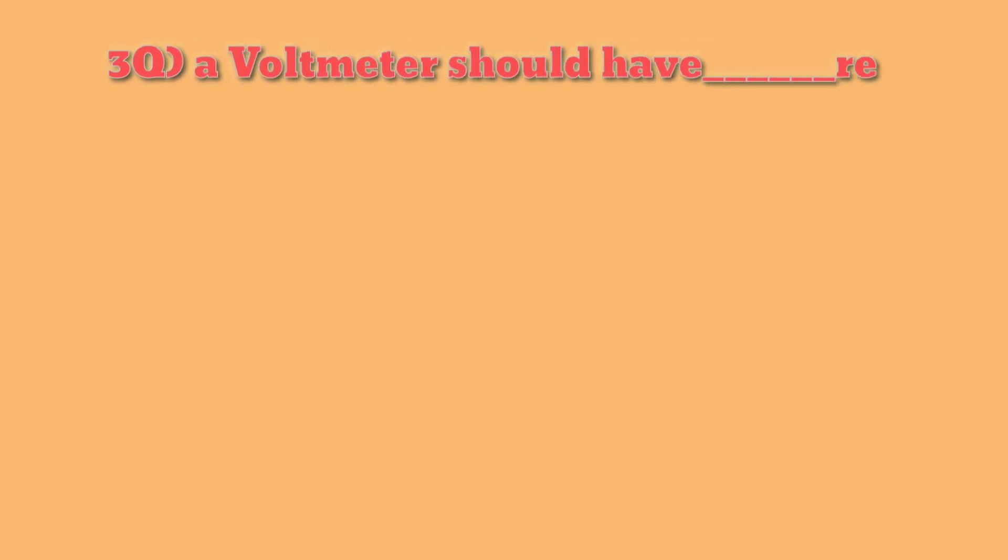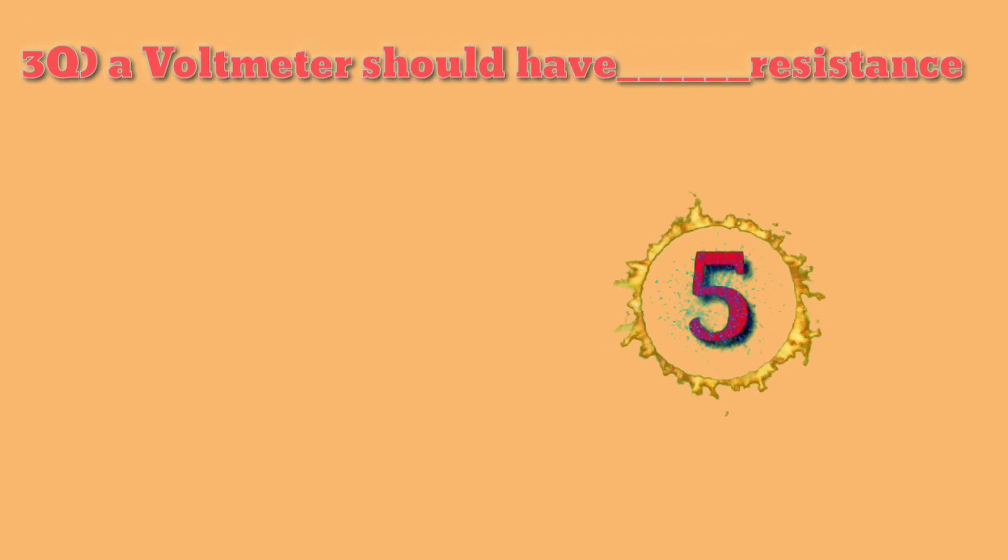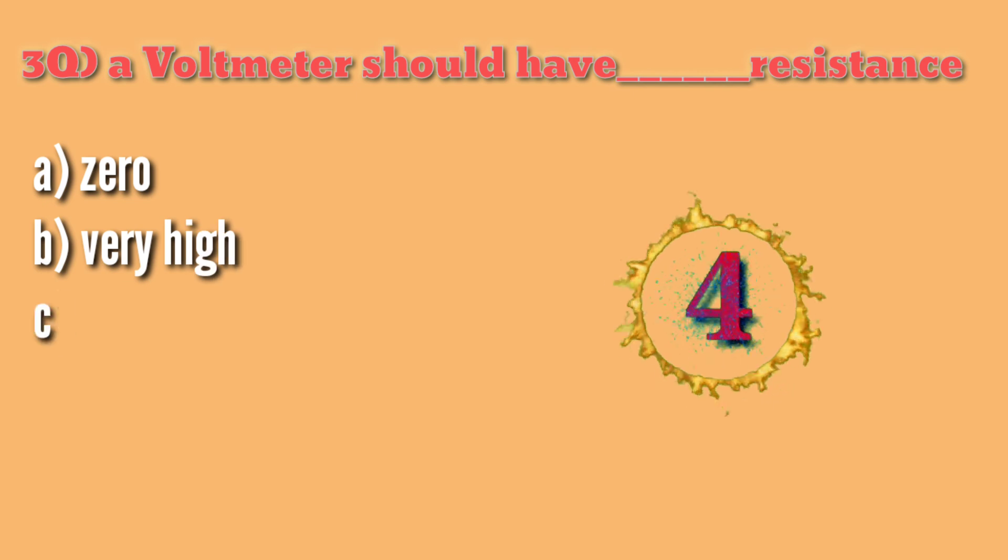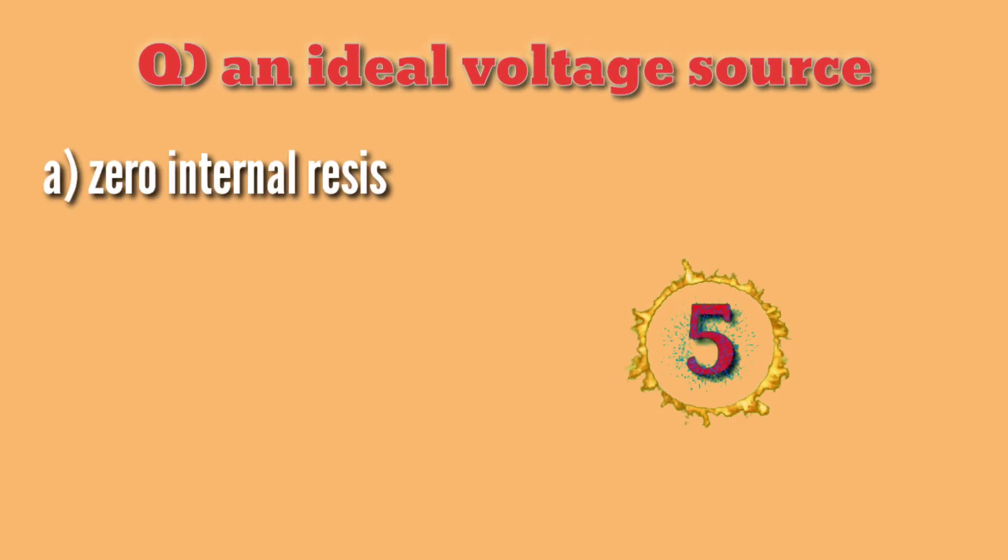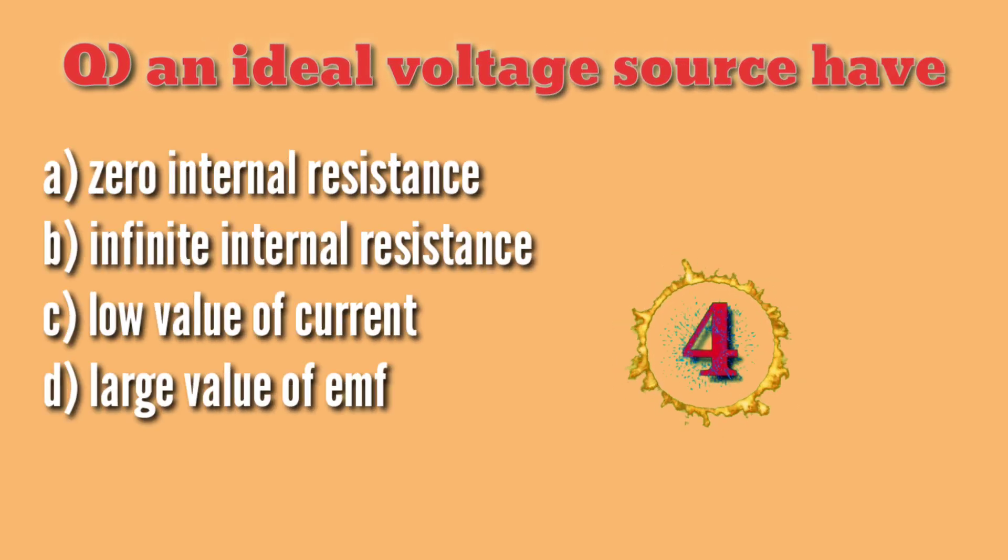Third question: A voltmeter should have dash resistance. A) 0, B) very high, C) very low, D) none of the above. The answer is B) very high. Voltage source have A) 0 internal resistance, B) infinity internal resistance, C) low value of current, D) large value of EMF.